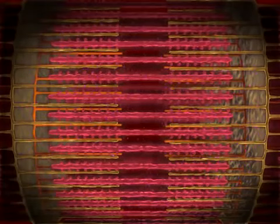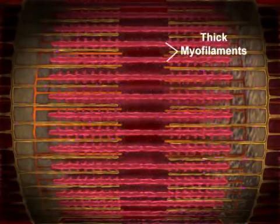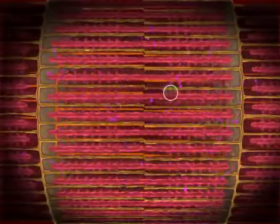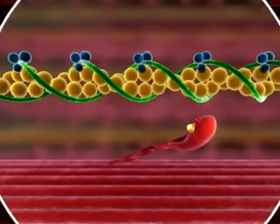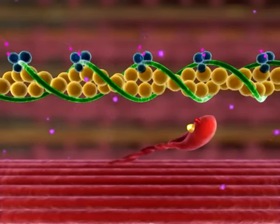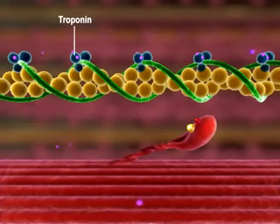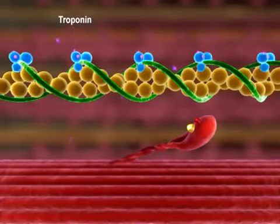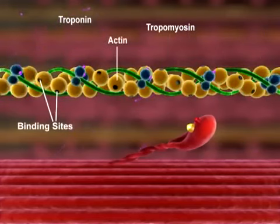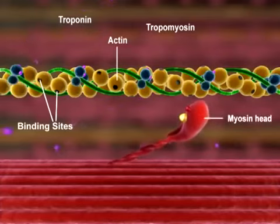A sarcomere shortens when myosin heads in thick myofilaments form crossbridges with actin molecules in thin myofilaments. The formation of a crossbridge is initiated when calcium ions, released from the sarcoplasmic reticulum, bind to troponin. This binding causes troponin to change shape, and tropomyosin moves away from the myosin binding sites on actin, allowing the myosin head to bind actin and form a crossbridge.